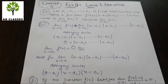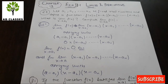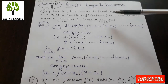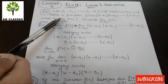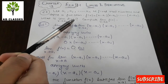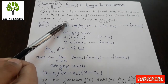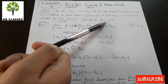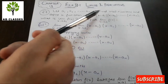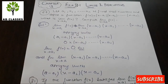Exercise 13.1, Limits and Derivatives, Question 29. Let a1, a2, up to an be fixed real numbers and define a function f(x) = (x - a1)(x - a2)...(x - an). We need to find the limit as x tends to a1. Even though the function looks complex, the answer is straightforward.